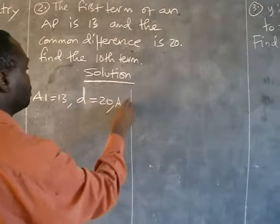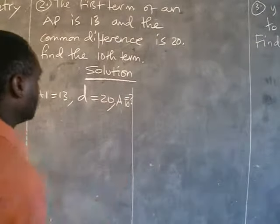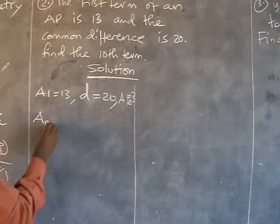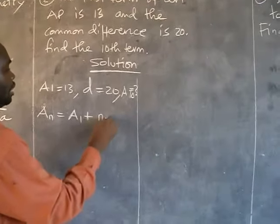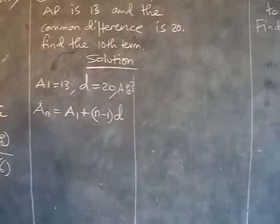10th term, so A10. We don't have A10. Therefore, normally An equals A1 plus (n-1) times the common difference.